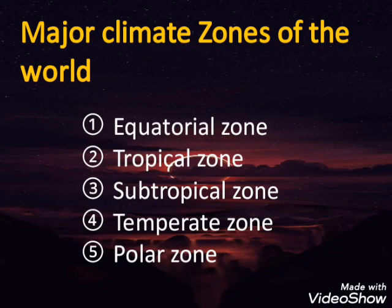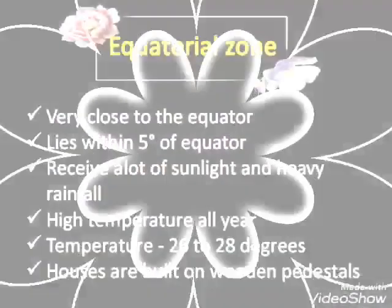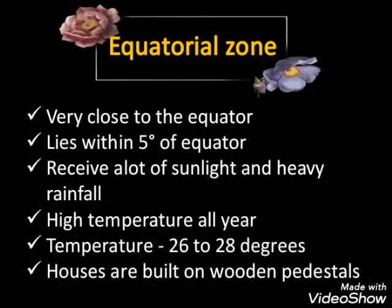Major climate zones of the world include equatorial zone, tropical zone, subtropical zone, temperate zone, and polar zone. The equatorial zone lies within five degrees of the equator on both sides. Being close to the equator, this region receives a lot of direct sunlight.